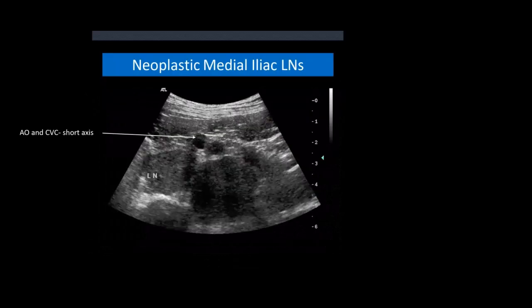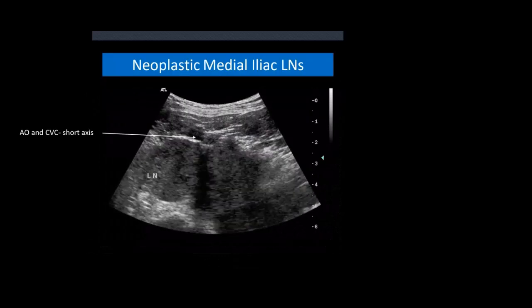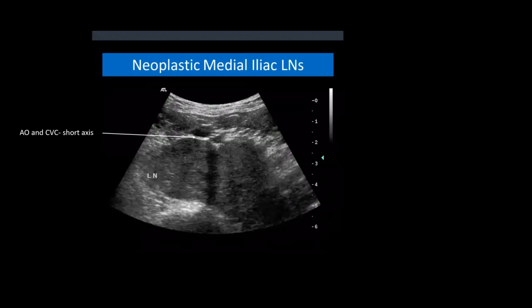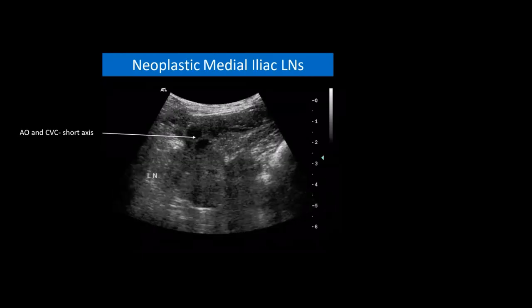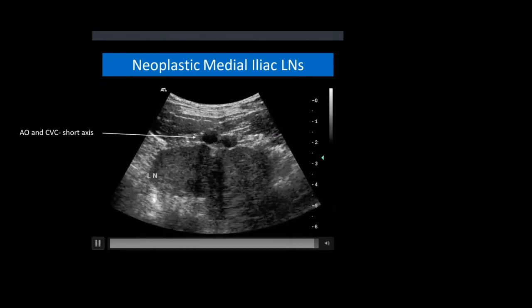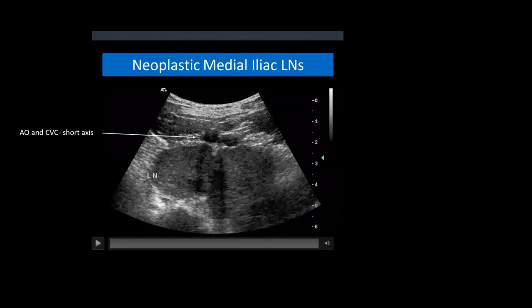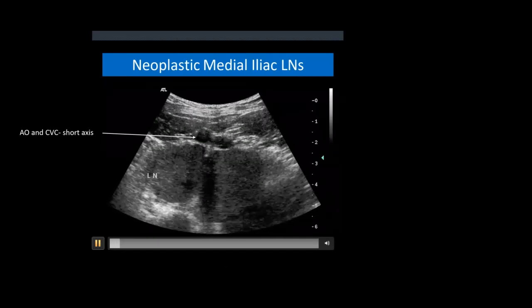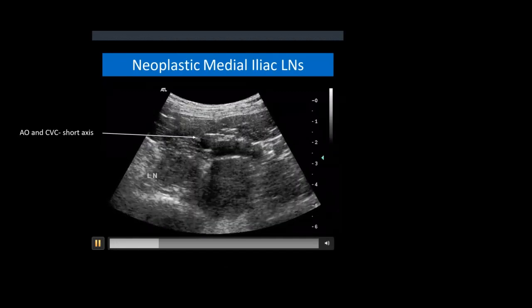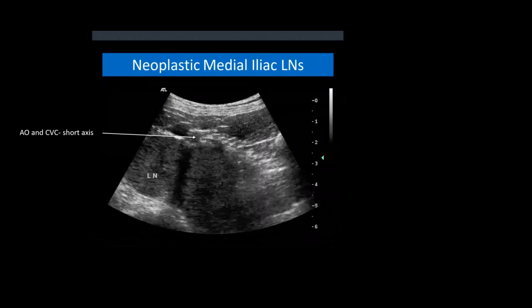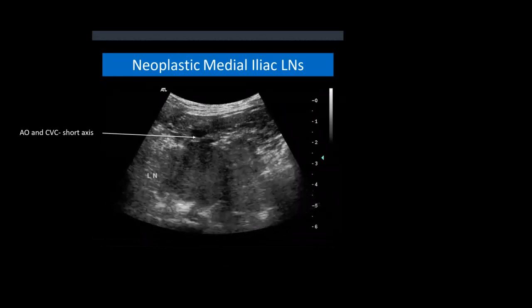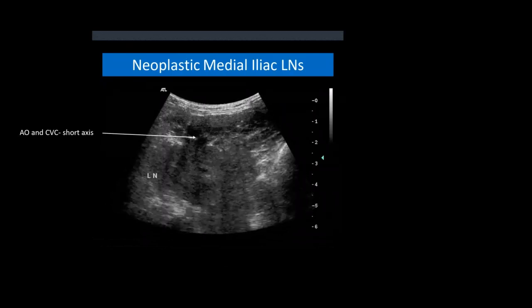On the next slide we have a short axis view through the medial iliac lymph nodes. Just to get your landmarks: we have the aorta, the caudal vena cava, and these golf ball-like, hypoechoic structures are the neoplastic medial iliac lymph nodes. This is a German Shepherd that had an anal mass and had these huge neoplastic lymph nodes.